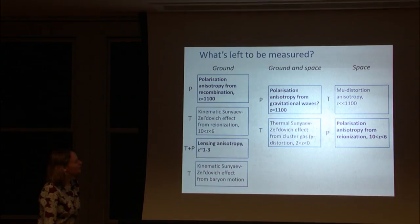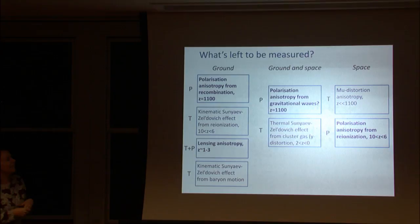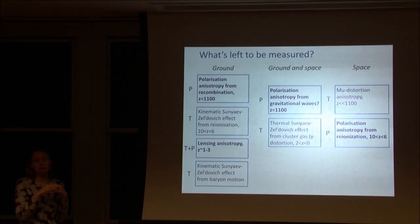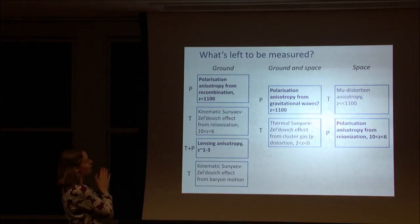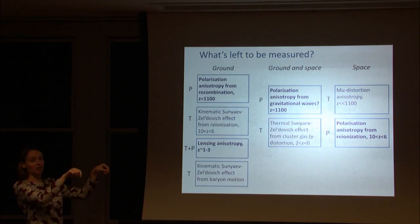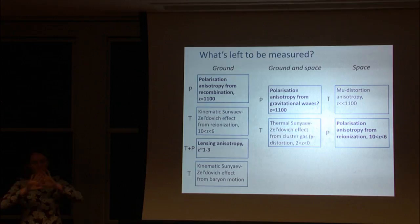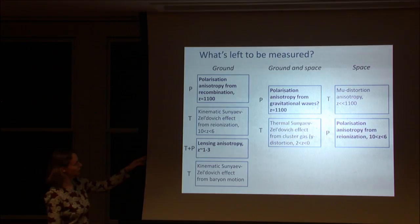There's a lot left to be measured, and the next phase of the CMB will largely be done from the ground since we don't have a Planck Mark II near the horizon. From the ground we can get better measurement of polarization anisotropy from the recombination era, and we can measure the lensing anisotropy in the CMB — making a map of how the CMB gets lensed around large-scale structure.